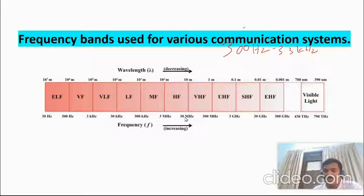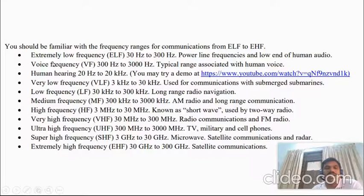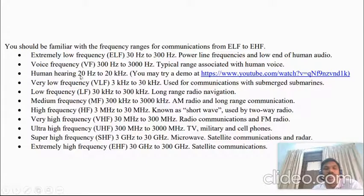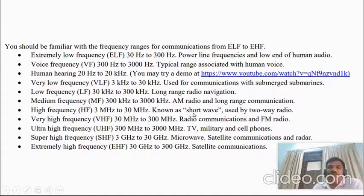Extremely Low Frequency is used for power line frequencies. Voice Frequency covers typical human voice. Very Low Frequency is used for submerged submarines. Low Frequency is for long-range radio navigation. Medium Frequency covers AM radio and long-range communication. High Frequency, also known as shortwave, is used by two-way radios. Very High Frequency is for FM radio. Ultra High Frequency covers TV, military, and cell phones. Super High Frequency is used for satellite communication and microwave links.